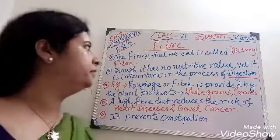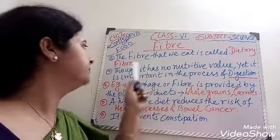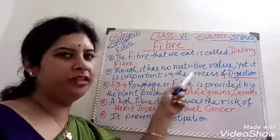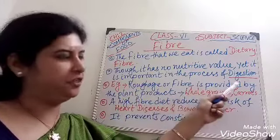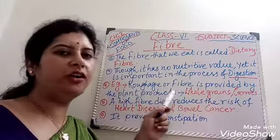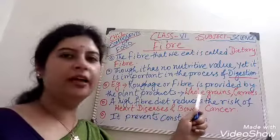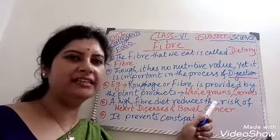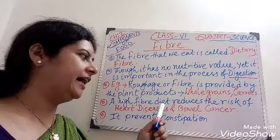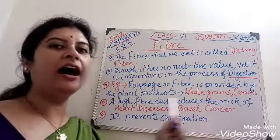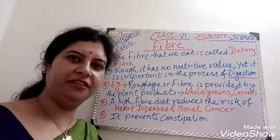Fiber, or roughage, is called dietary fiber. Though it has no nutritive value, it is important in the process of digestion. Roughage is provided by plant products only — for example, whole grains like wheat and rice, and vegetables like carrot and cabbage. A high-fiber diet reduces the risk of heart diseases and bowel cancer, and also prevents constipation.